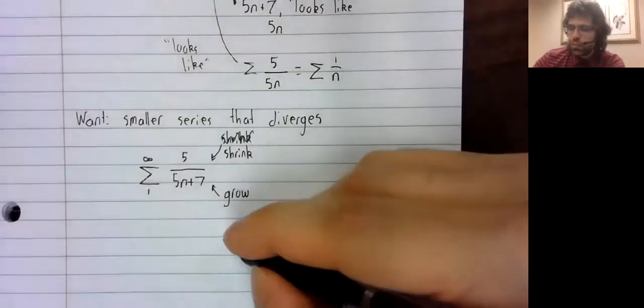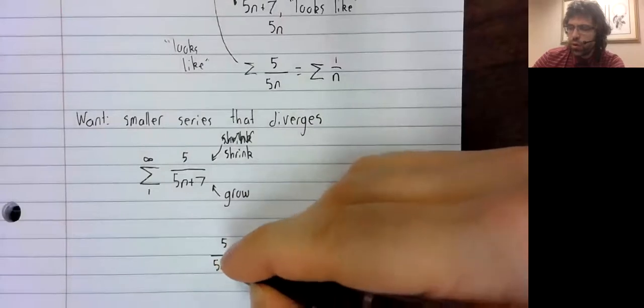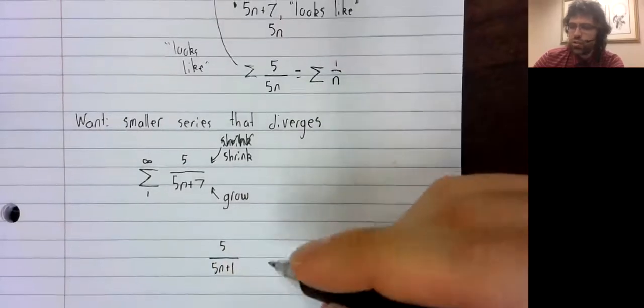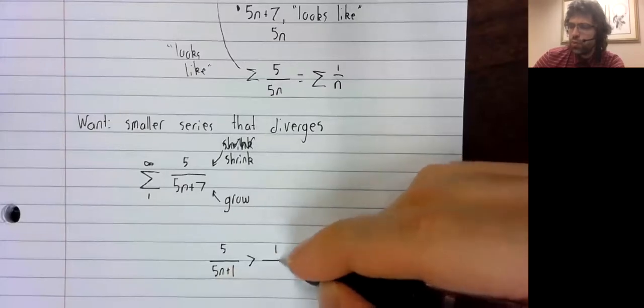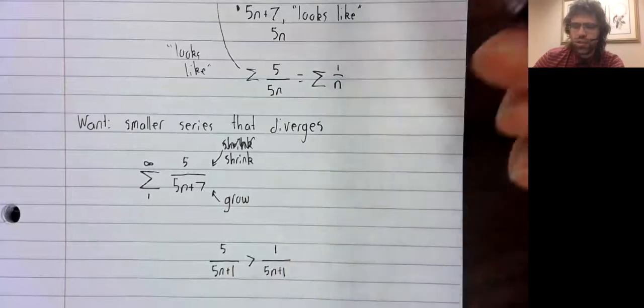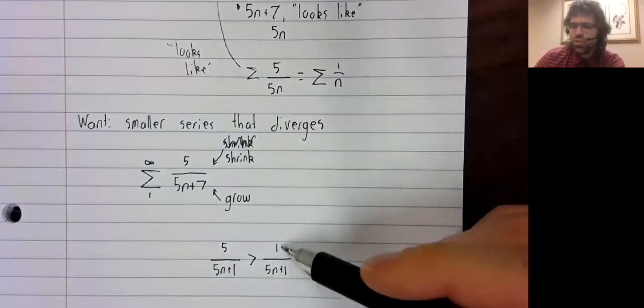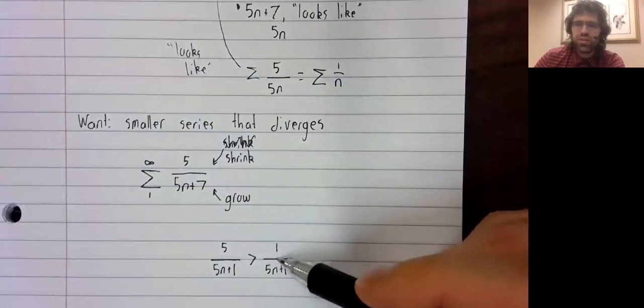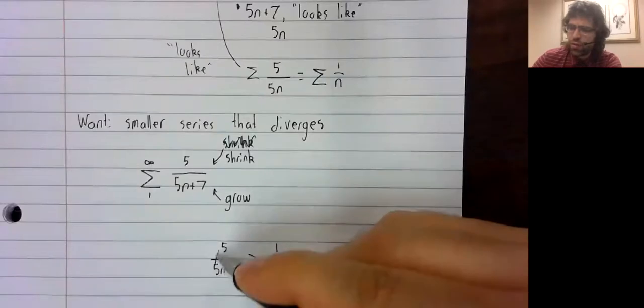Like, it's true that 5 over 5n plus 7 is greater than 5 over 5n plus 1. But that doesn't seem to be useful to us, because we don't know whether this series converges or diverges.